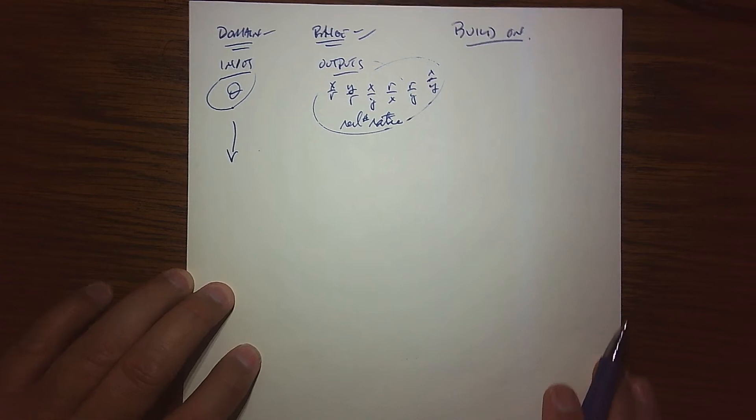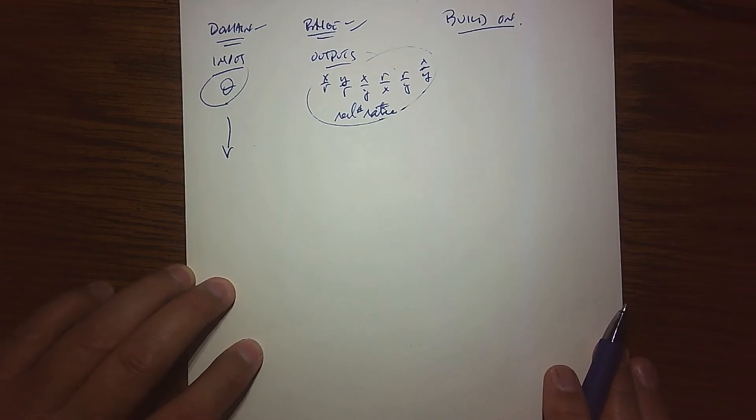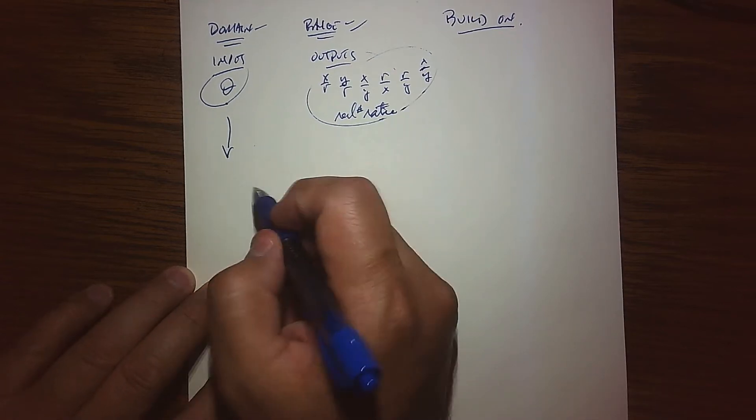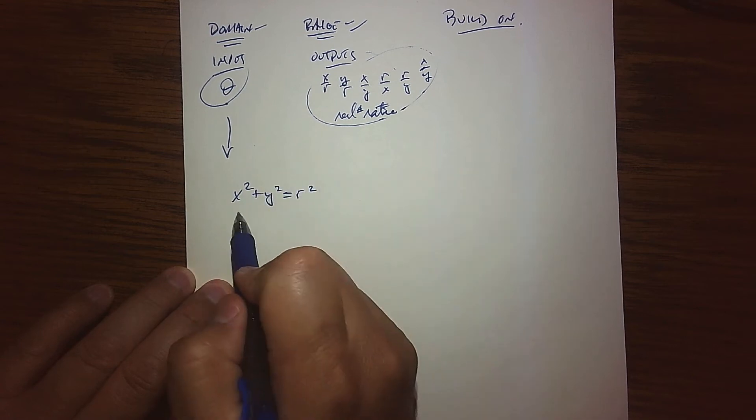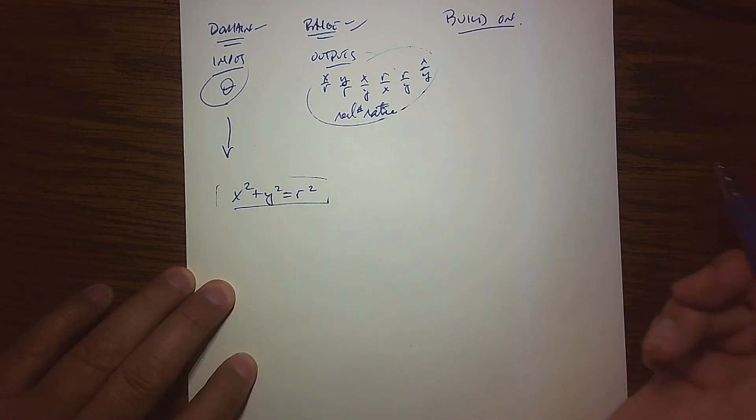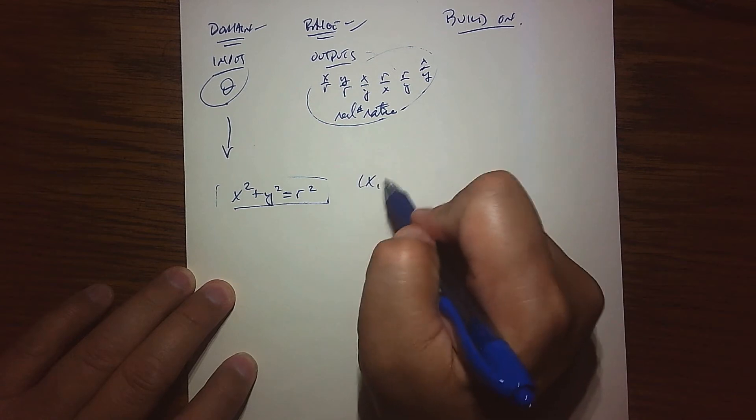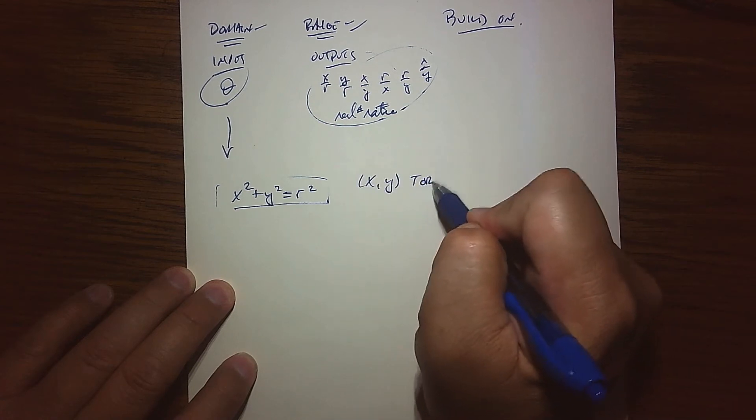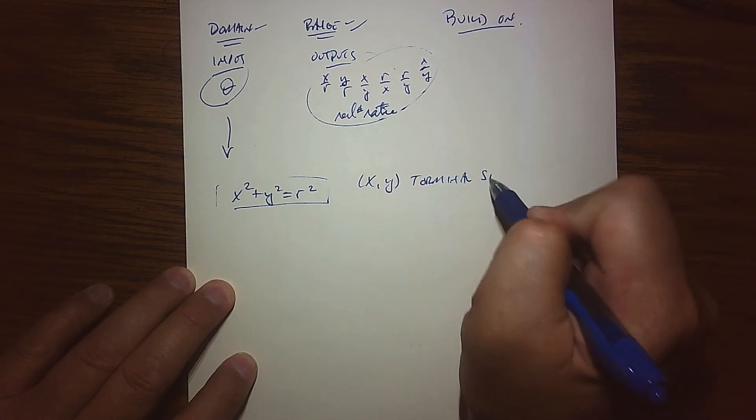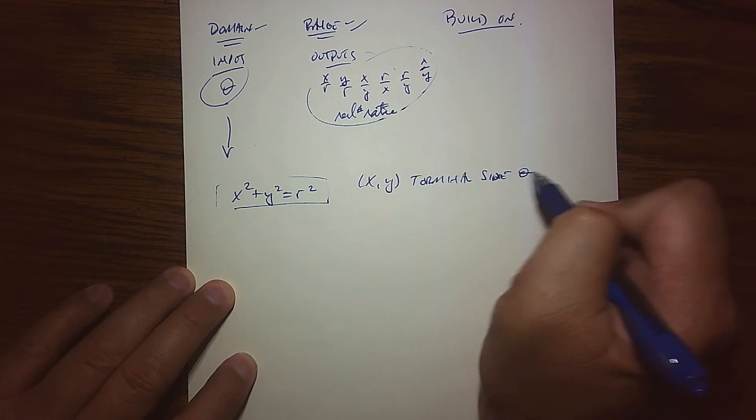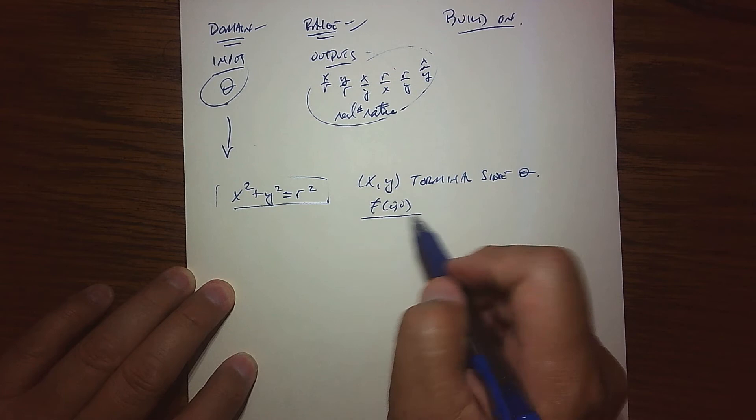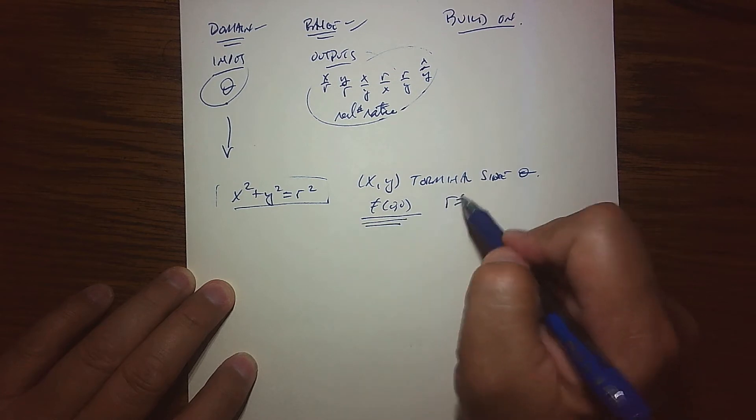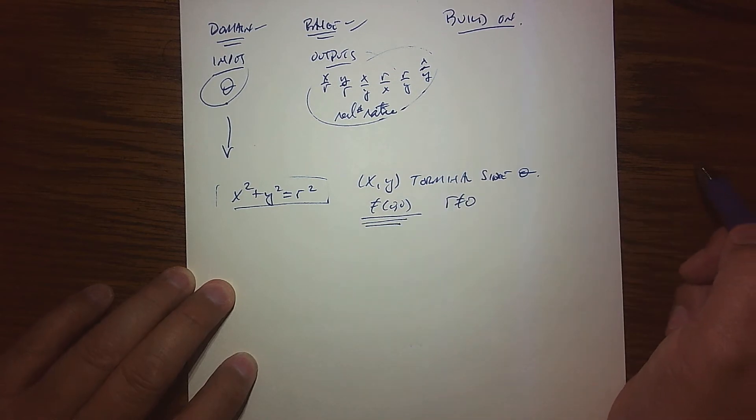The domain is actually a little bit easier to look at. Everything begins with the fact that we have this relationship with regard to X, Y, and R, and that X, Y, and R is on the terminal side of our angle theta, and it cannot be equal to the origin.